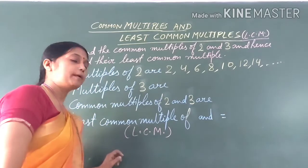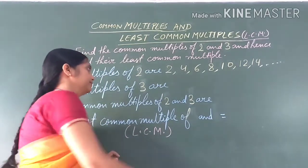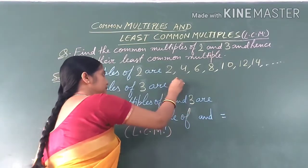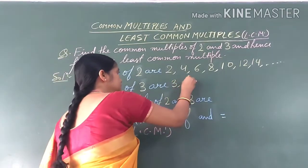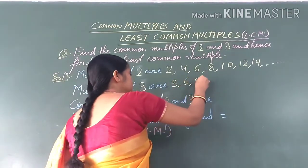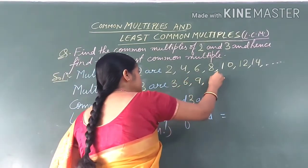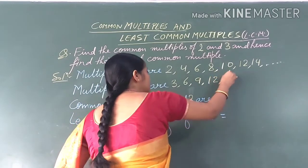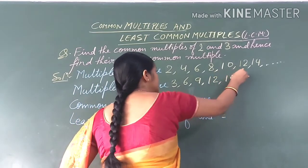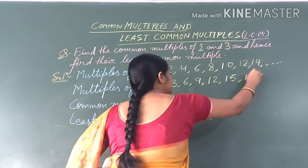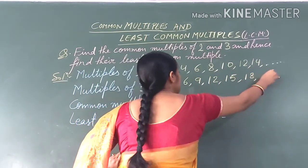Similarly, multiples of 3 are: 3, 6, 9, 12, 15, 18, and so on.